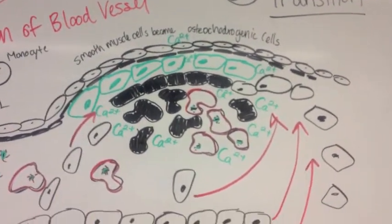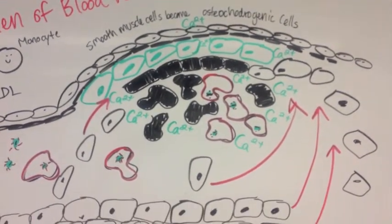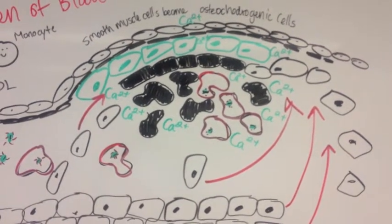Because of the plasticity of these cells, they can become osteochondrogenic. They will begin to distribute calcium throughout the necrotic core and the fibrous cap.